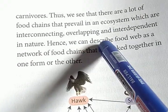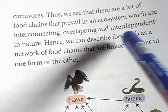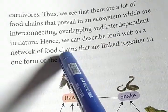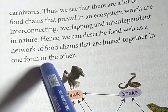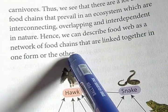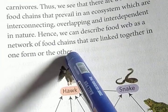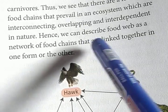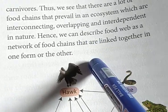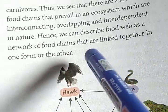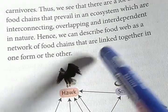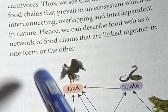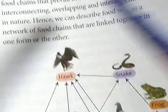Hence we can describe a food web as a network of food chains that are linked together from one form to another. A food web is an interlock of multiple food chains, whereas the food chains are linked together from one form to another.